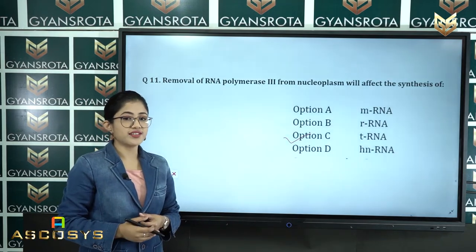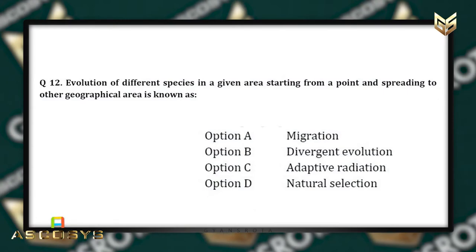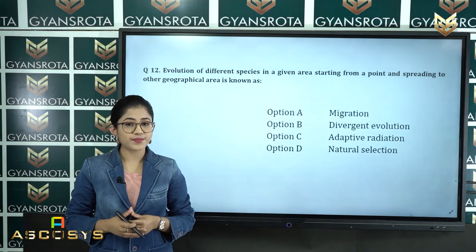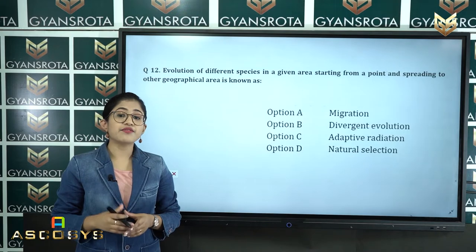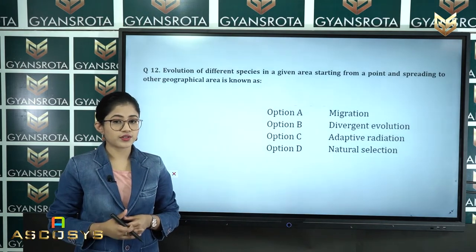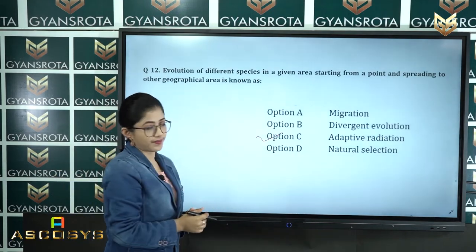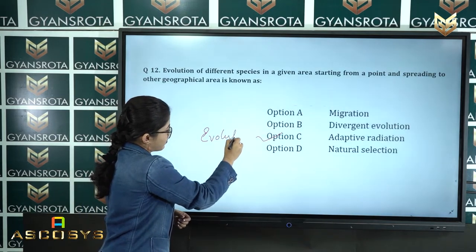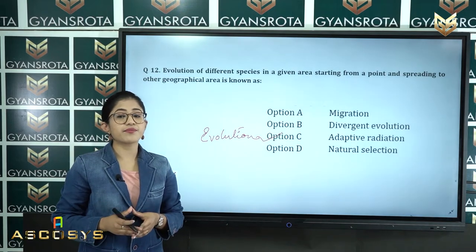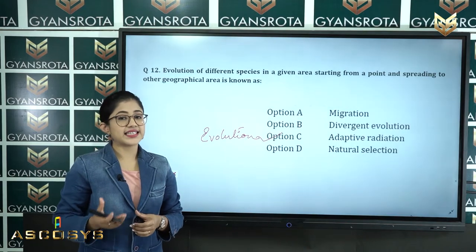Question number 12: Evolution of different species in a given area starting from a point and spreading to other geographical areas is known as — option A migration, option B divergent evolution, option C adaptive radiation, option D natural selection. This is from the chapter Evolution. The correct answer is option C, adaptive radiation.